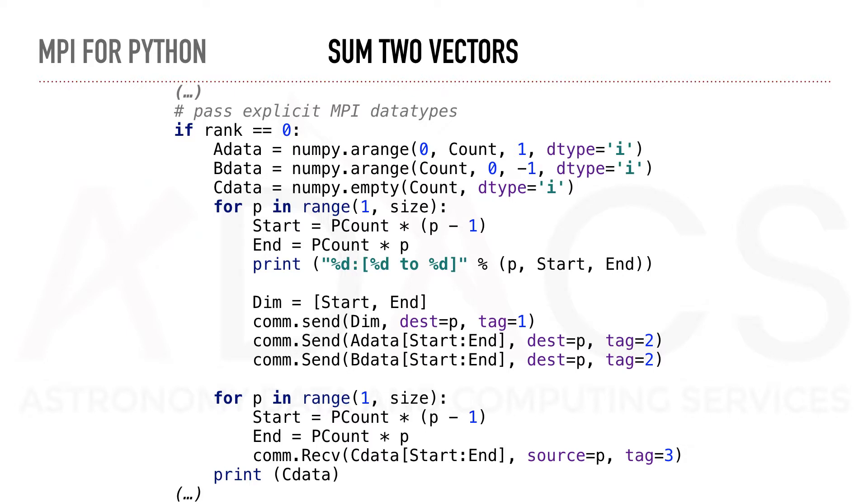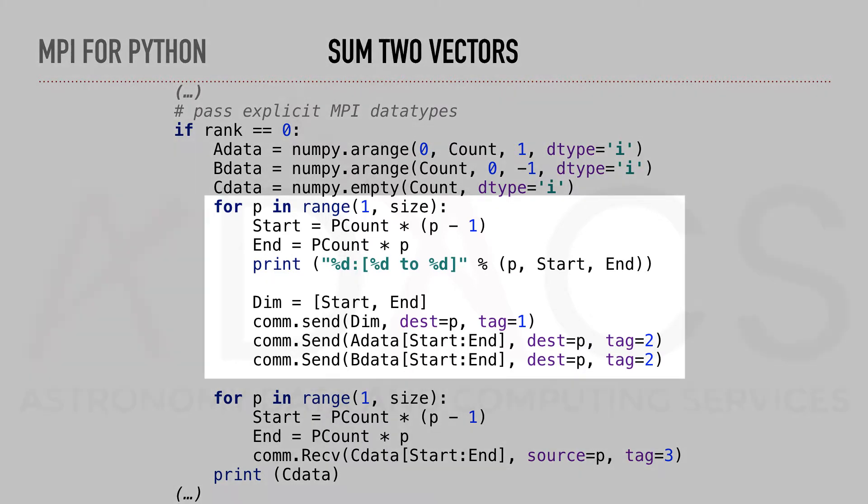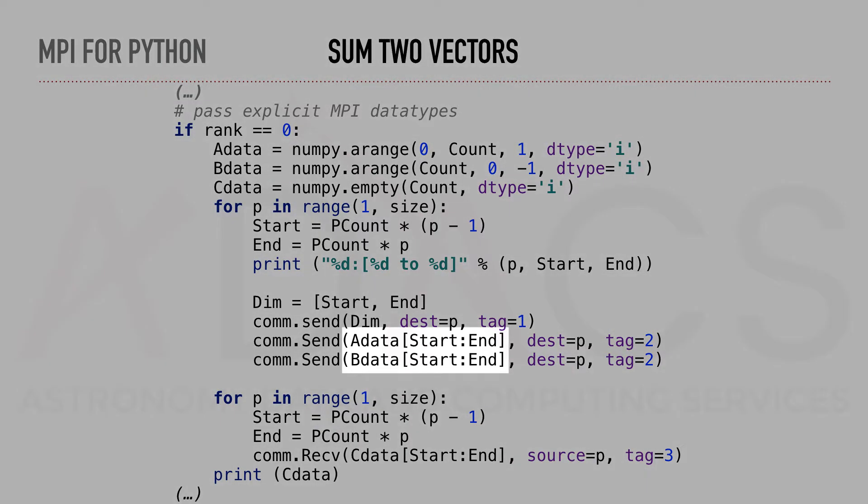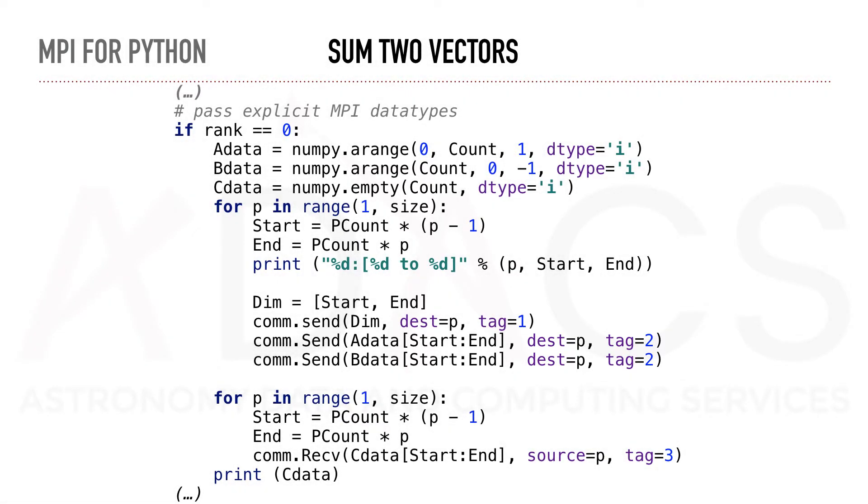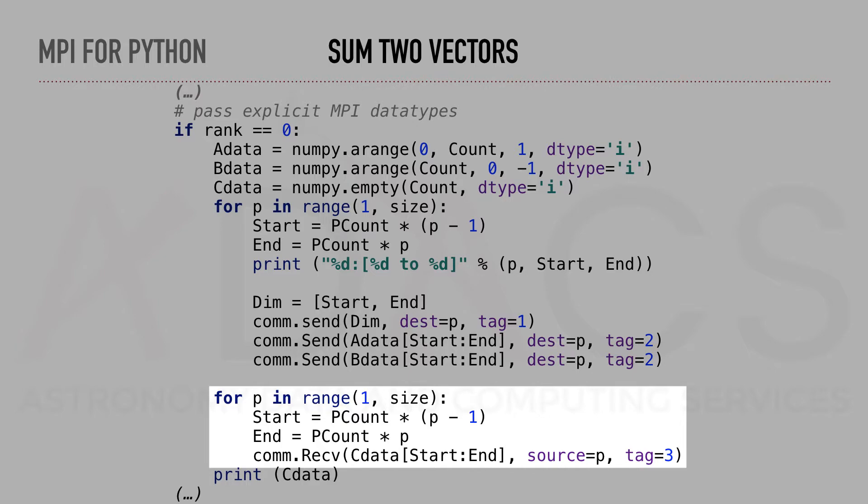The next step consists in splitting the summation onto the resulting available processes. We do this by looping through the remaining processes, sending over the corresponding slice of the vector, for which we set the start and end boundaries accordingly. Then, we send these two vector slices to the corresponding process P, specifying a tag, in this case tag number 2. When everything is complete and the several processes send back their individual answers, process 0 will receive these messages into the third vector using tag number 3.